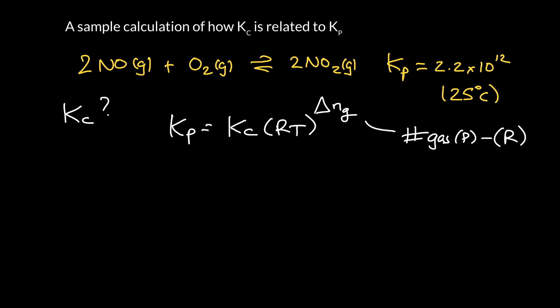And so in this equilibrium here, we've got 2 molecules of gas on the product side, we've got our 2 molecules of NO2, and on the reactant side, we've got 2 here and 1 here, so that would be 3. And so delta N gas would be 2 minus 3, and that is minus 1.